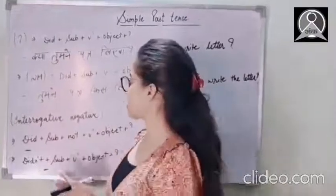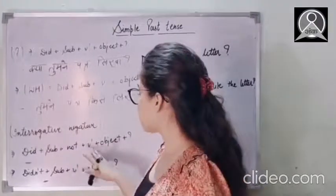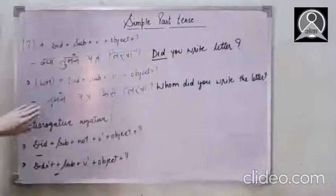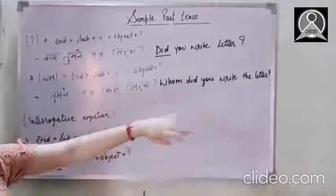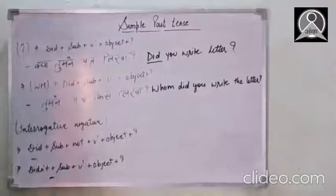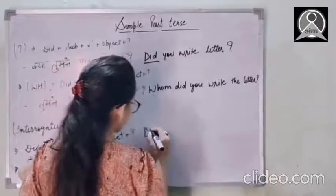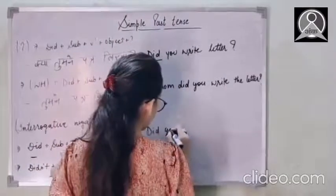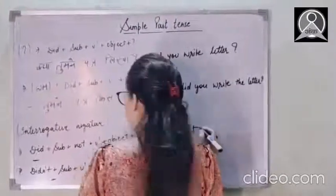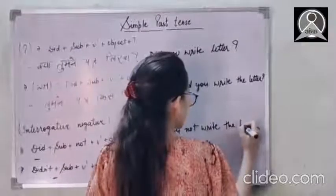Now let's talk about the other part and that is interrogative negative. So here the rule is did plus subject plus not verb's first form plus object plus question mark. So I'm taking the same example from here. Tumne patr kise likha? Whom did you write the letter? Fine. So for this one, did subject not verb's first form object kya tumne patr nahi likha? So here I will be like did for the very first, subject tumne you, then not. We have to put not after the subject part. Did you not then verb's first form write. Did you not write then the object the letter? Did you not write the letter?